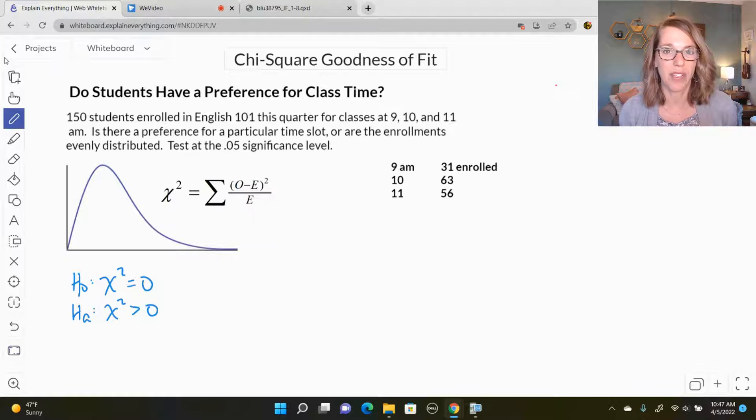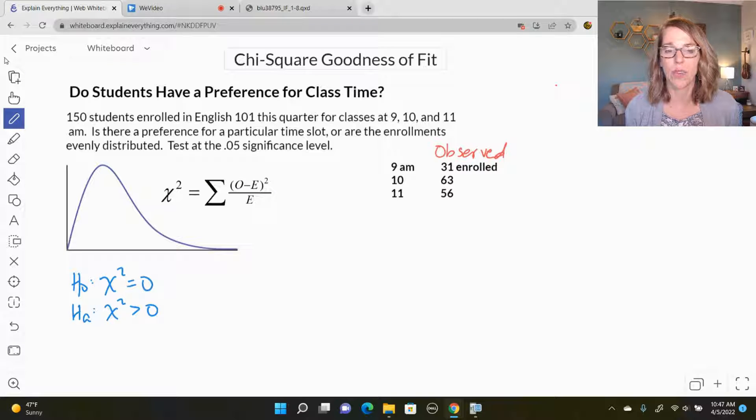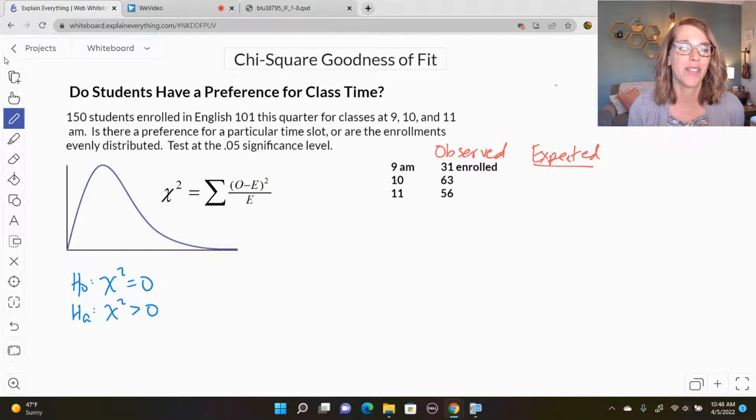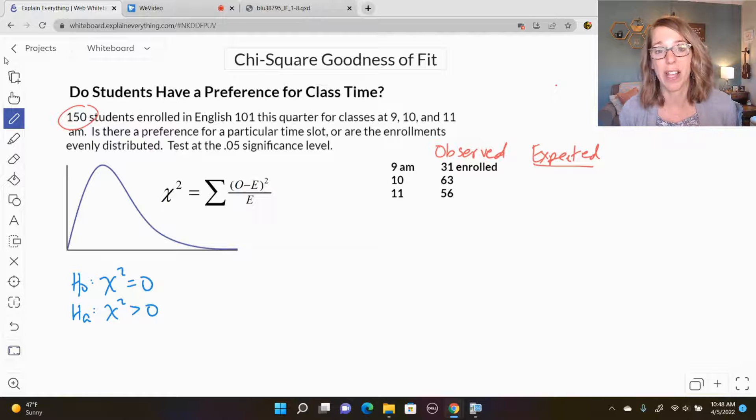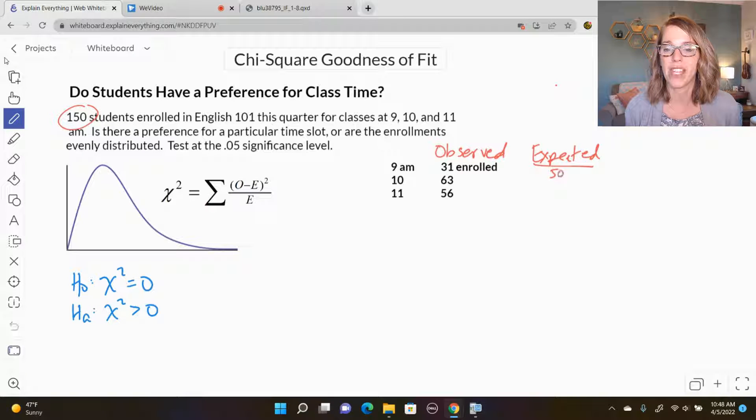We want to see if students have a preference for classes. We've got some enrollment data here, we're going to call this our observed data. So we've got 150 students who have enrolled in 9, 10, and 11 o'clock classes in this distribution. If there was no preference, we would expect, so this is going to be my expected column, we would expect those 150 to be evenly divided by three. So 150 divided by three would give me 50 in each of these classes.